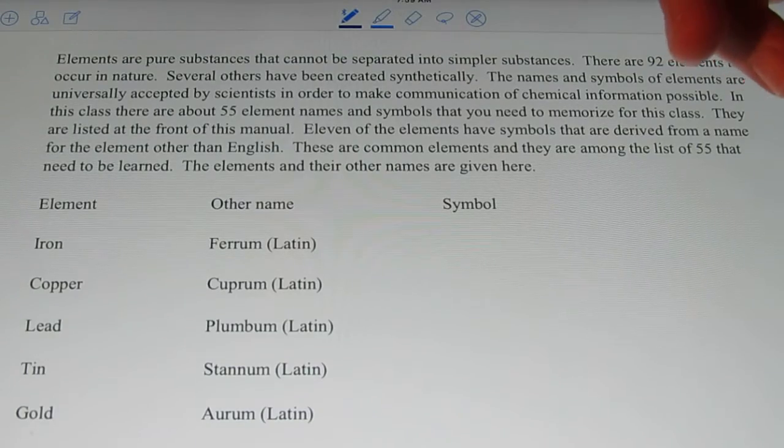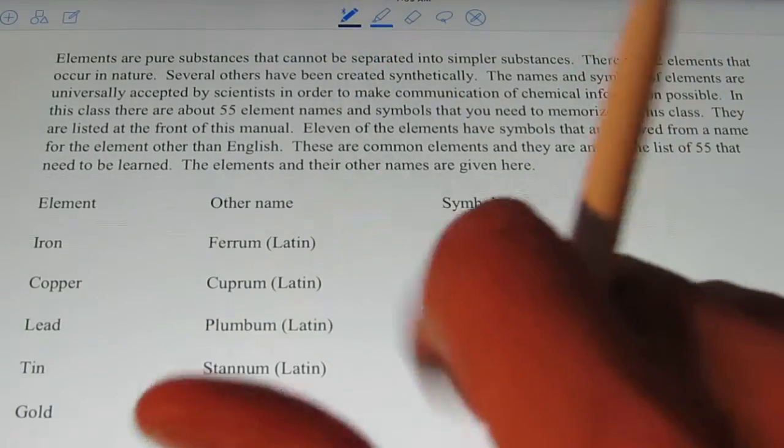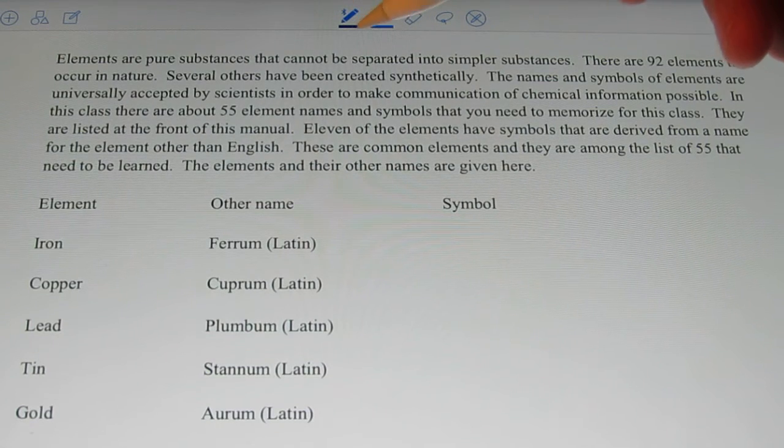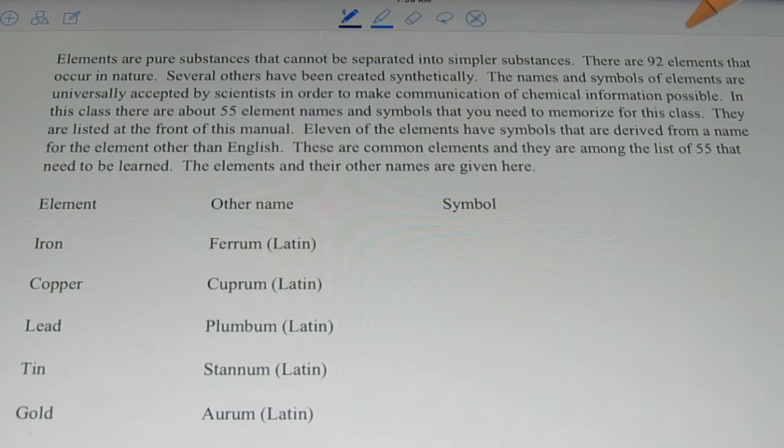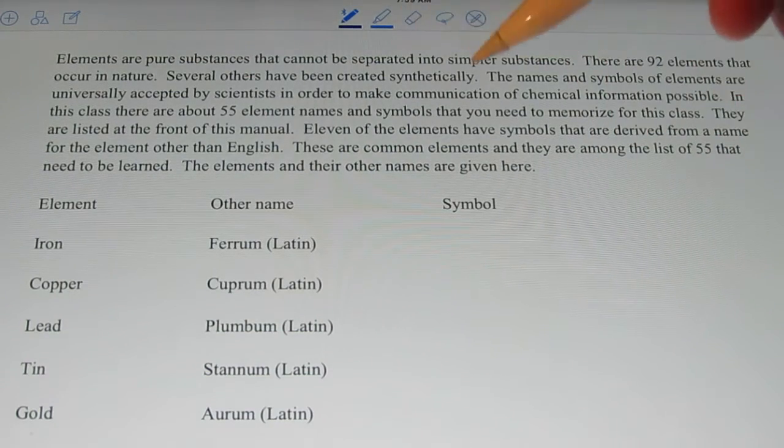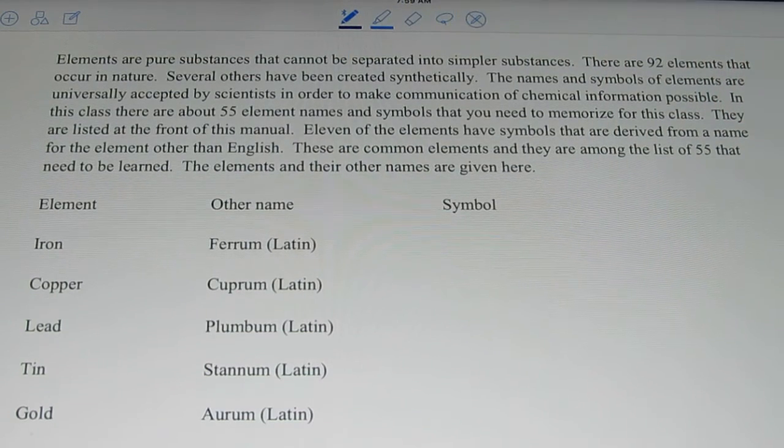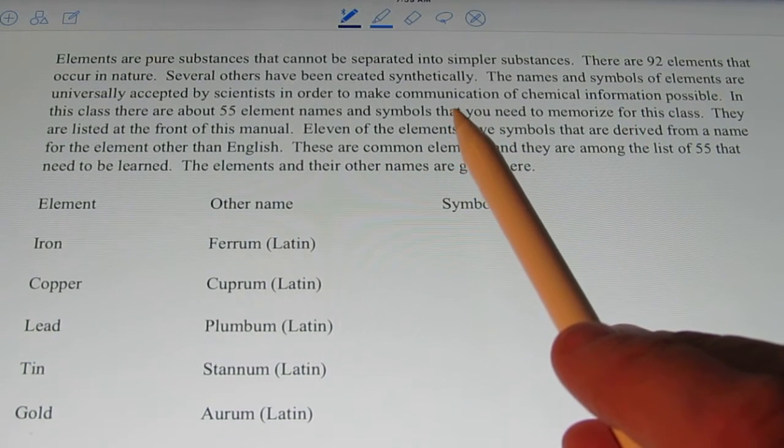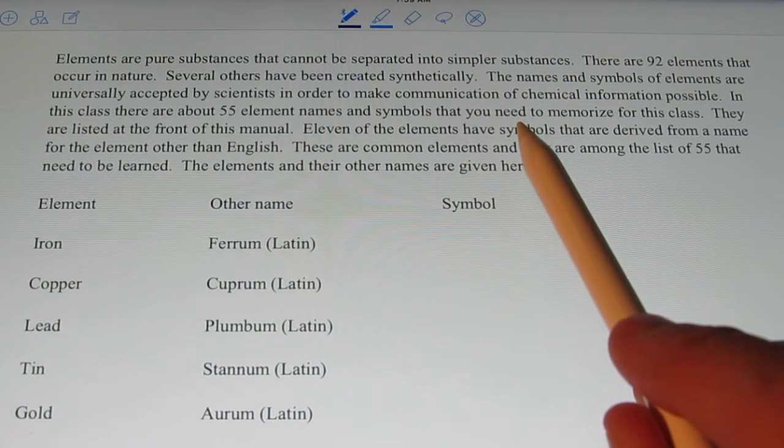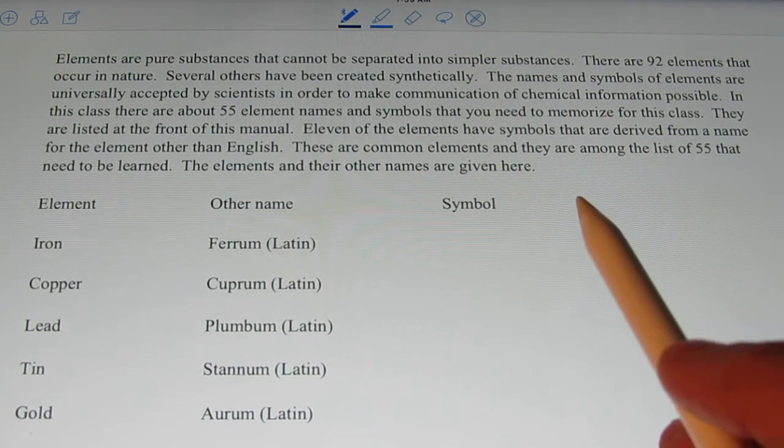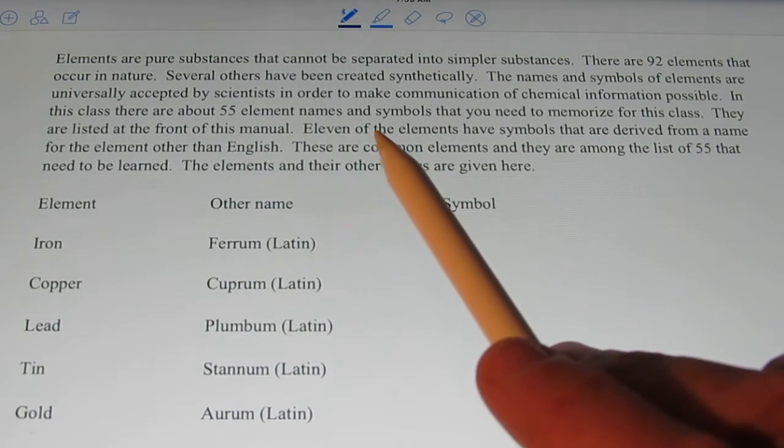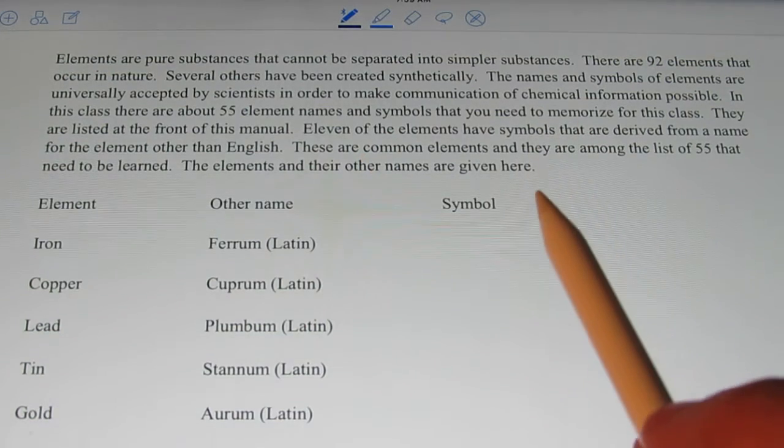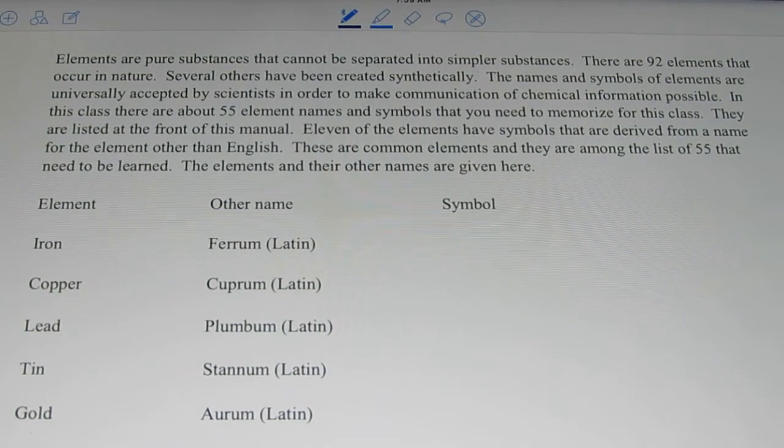So elements are pure substances. Remember we said that elements and compounds are pure substances. Elements are pure substances that cannot be separated into something that's simpler. There are 92 elements that occur in nature. Several others have been created synthetically. The name and symbols of the elements are universally accepted by scientists in order to make communication of chemical information possible. In this class there are about 55 element names and symbols that you need to memorize for this class. They're listed towards the front of this manual. So let me show those to you quickly.